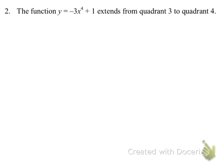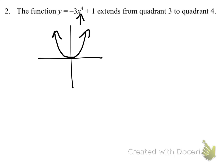Number two: the function negative 3x to the fourth plus 1 extends from quadrant 3 to quadrant 4. x to the fourth would look something like this, but because of that negative, our function actually looks like this. Remembering our quadrant numbers — 1, 2, 3, 4 — the red does extend from quadrant 3 to quadrant 4, so that's true.